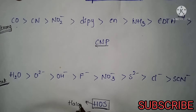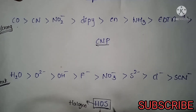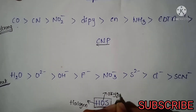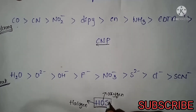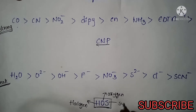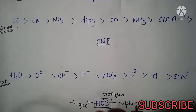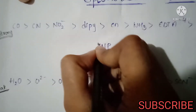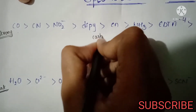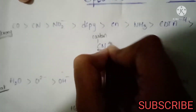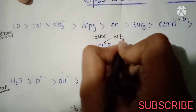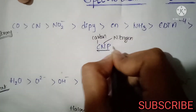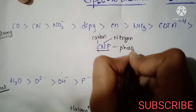In the mnemonic HOS: H means halogens, O means oxygen, and S means sulfur. In CNP: C means carbon, N means nitrogen, and P means phosphorus.